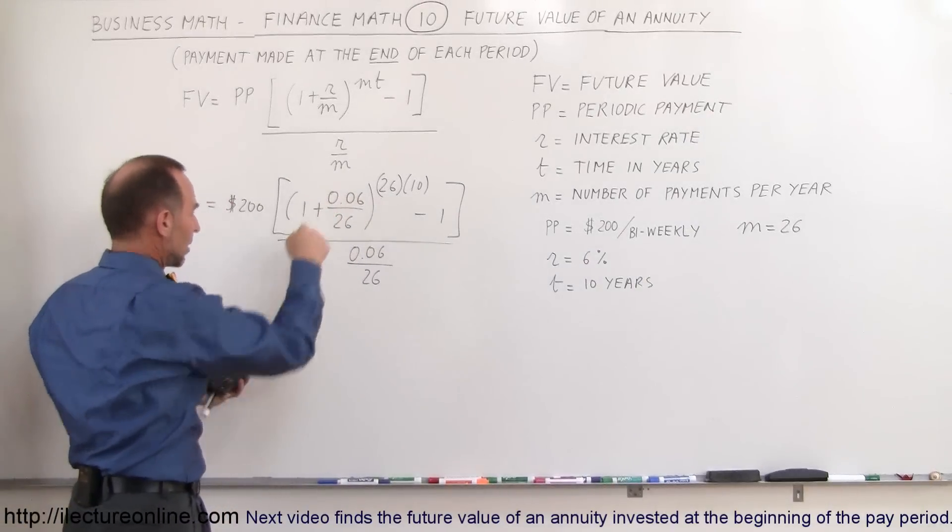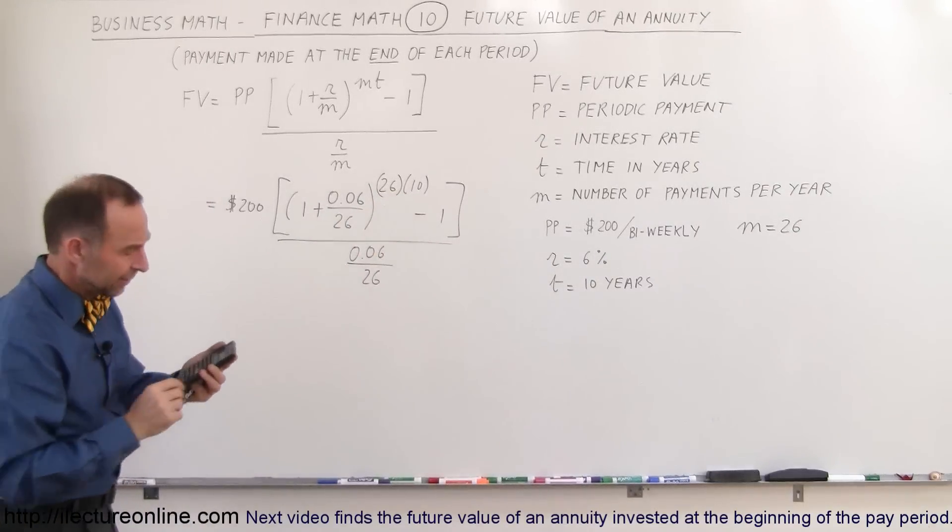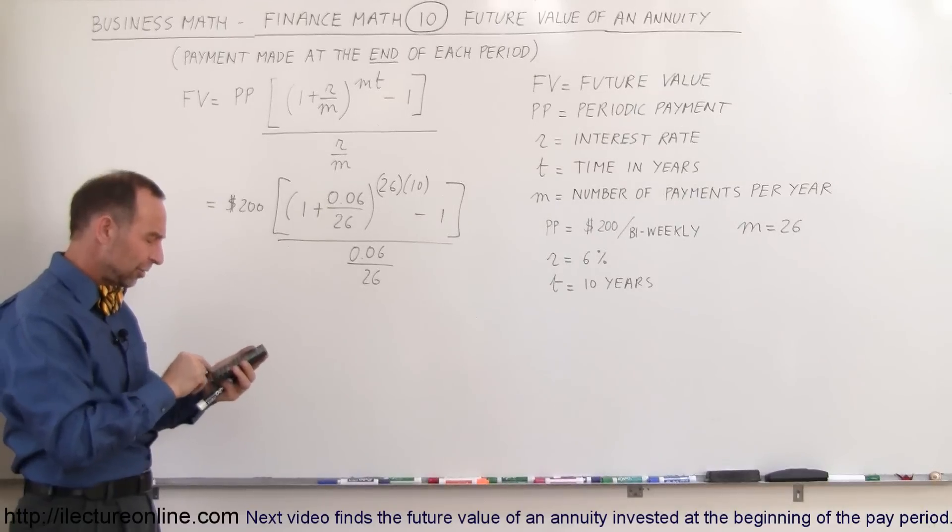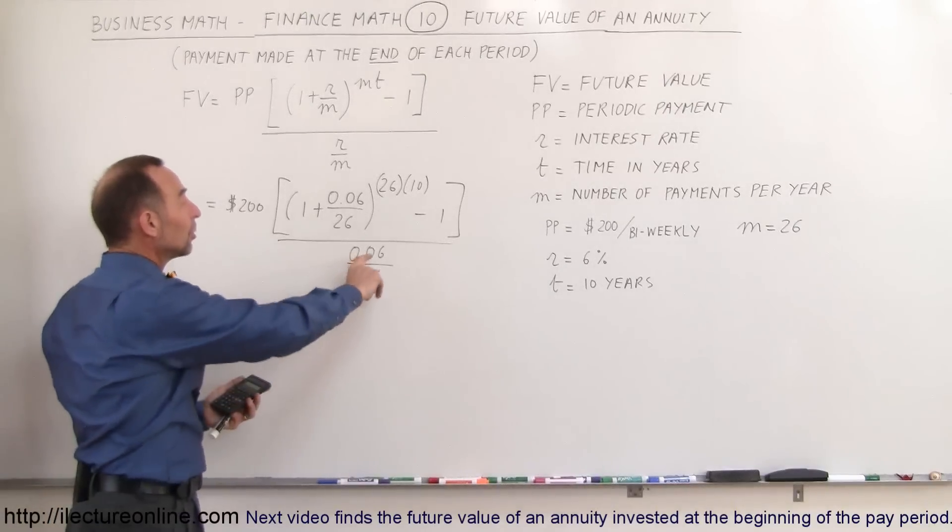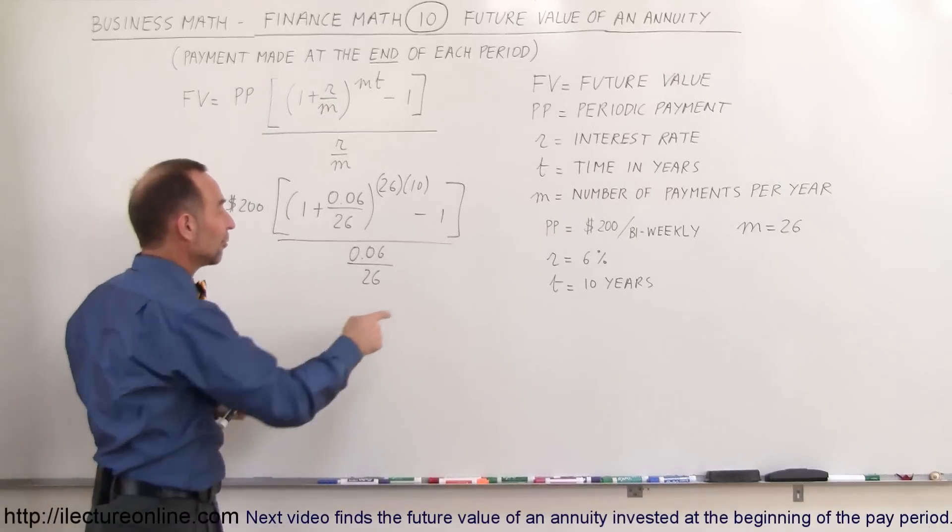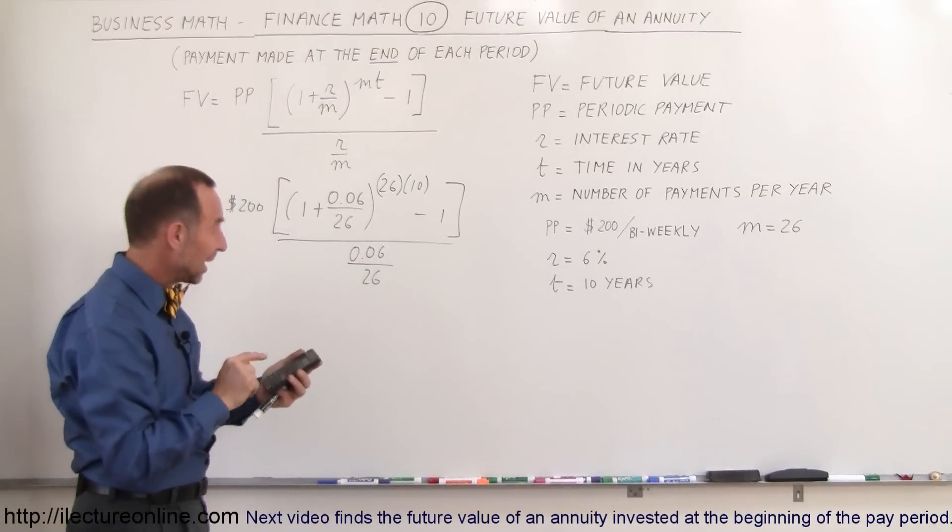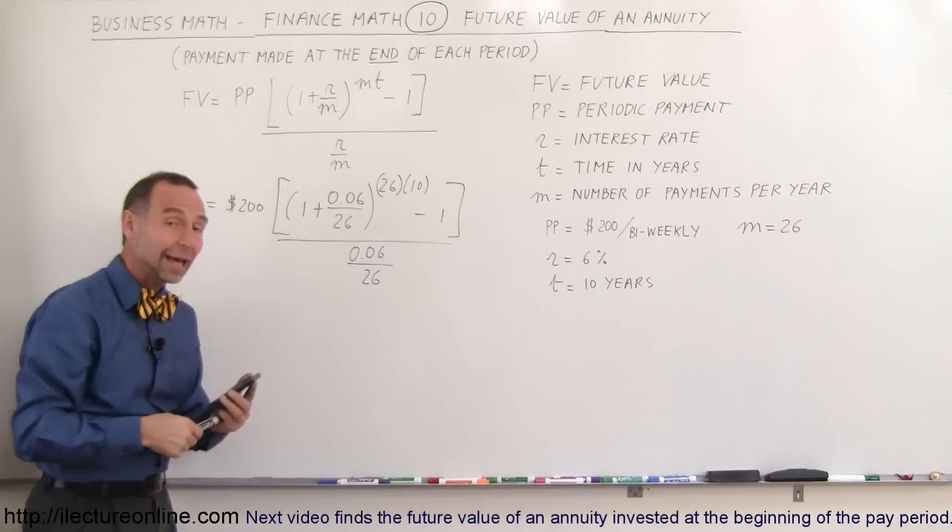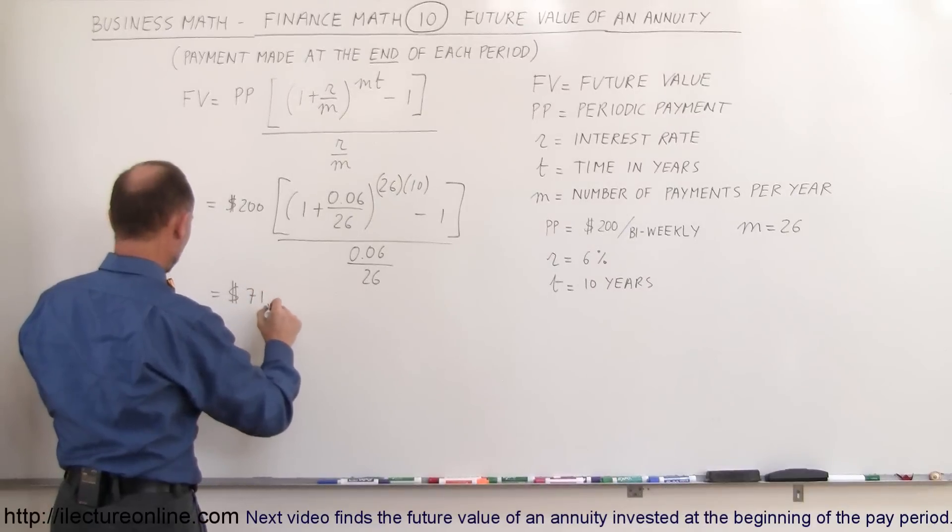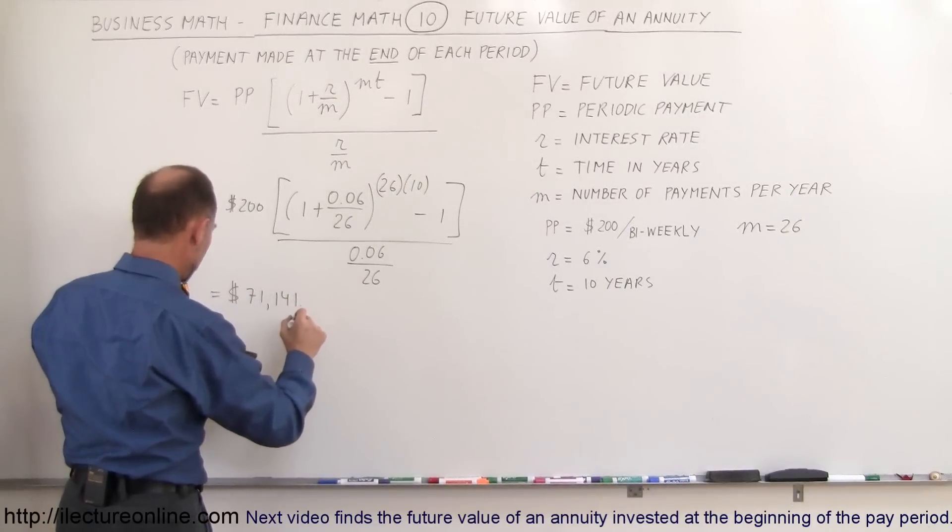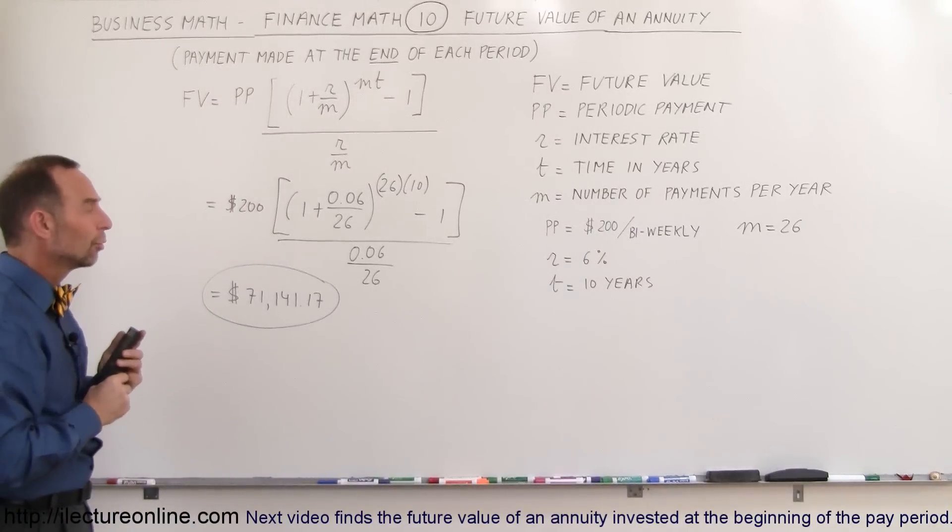All right, let's find out. So what I like to do is I like to start from in here, so I go 0.06 divided by 26, add that to 1, and then raise that to the 260th power. It's nice to have calculators. So x to the y power, 260, subtract 1 from that, minus 1, equals, and then I'm going to multiply that times the inverse of this, because dividing by a fraction is the same as multiply times the inverse. I'm going to multiply times 26 and divide by 0.06. So times 26, divide by 0.06, and then I multiply it times 200, times 200, and what do I get? After 10 years, that annuity would have $71,141.17.